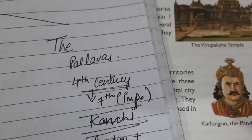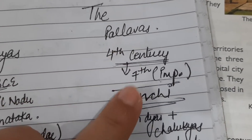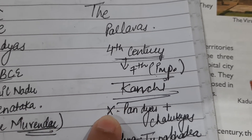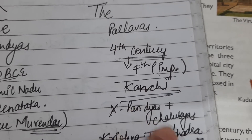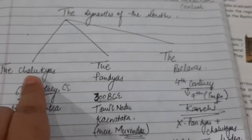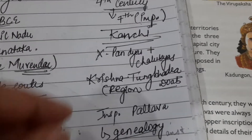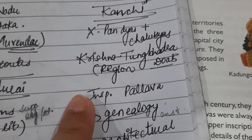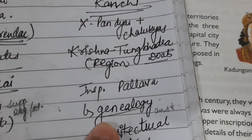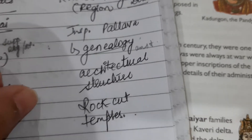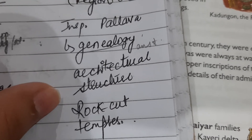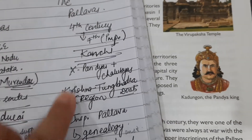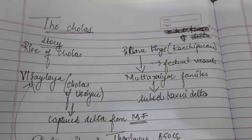Now let's study the Pallavas. They came around the 4th century and their importance increased a lot by the 7th century. Kanchi was their main city. They were always at war with the Pandyas and Chalukyas over this region, specifically a lot of war over the Krishna region doab. Inscriptions of the Pallava dynasty have been found which reveal their genealogy - from where they started and who their ancestors were. Their architecture was also very popular, and the rock-cut temples are an example - this tradition came from the Pallavas.